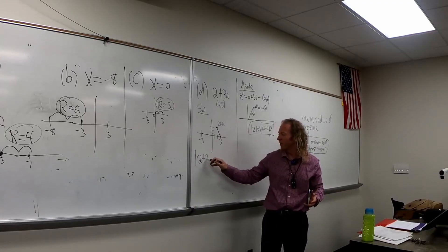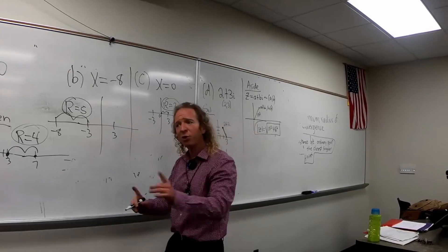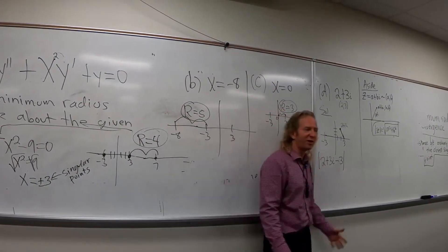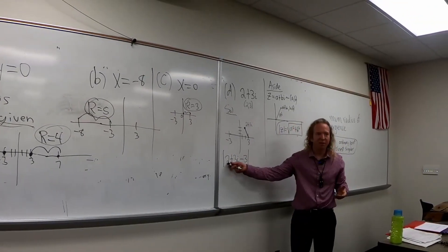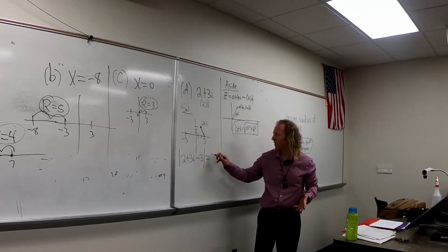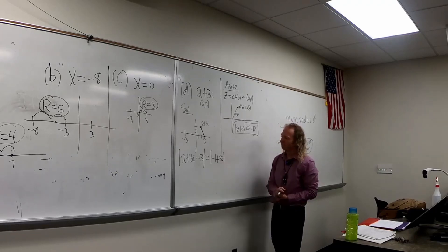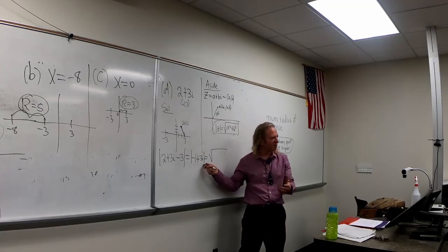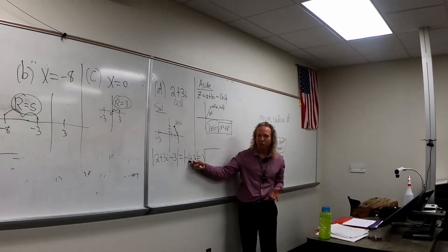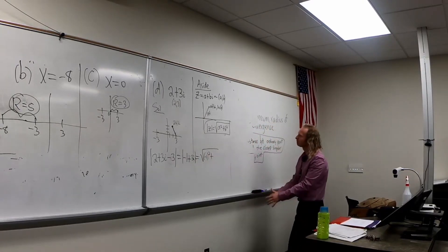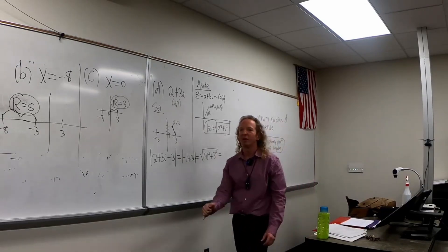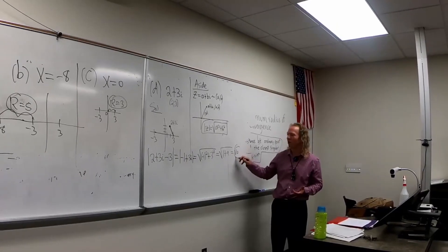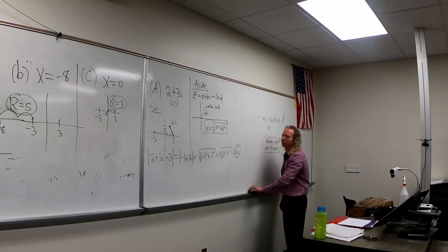To find R, all you do is subtract them and then take the modulus. So we have modulus of two plus three i minus three. It doesn't matter which you put first, but if you put the three first, you need parentheses around two plus three i. So you do the math inside: two minus three is negative one. So we get modulus of negative one plus three i. Then we take the square root — negative one squared plus three squared — which gives us one plus nine, which is ten. So R equals root ten.